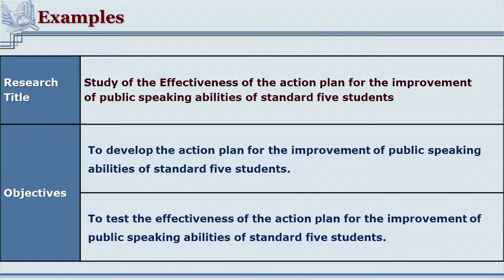The second objective is: to test the effectiveness of the action plan for the improvement of public speaking abilities of standard 5 students. This is the main research part, where the researcher studies how effective the designed action plan was — how far it was successful, what hurdles arose during implementation, which aspects were liked or enjoyed by students. Thus, the main problem has been divided into two sub-problems: sub-problem one is the development of the action plan, and sub-problem two is assessing the actual effectiveness of that action plan.